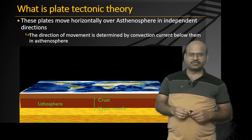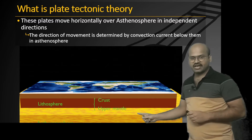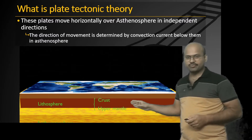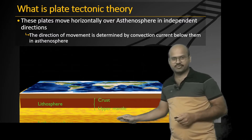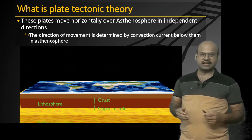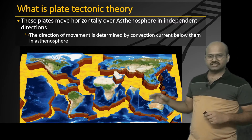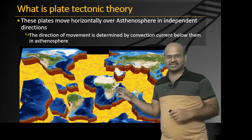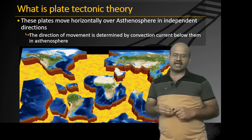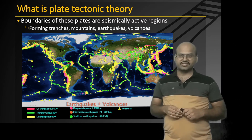These plates move over the asthenosphere in independent directions. The asthenosphere is in a plastic state, so it offers very little resistance to the moving landmasses above it. An animation shows different plates of lithosphere moving above the asthenosphere — different blocks moving independently.